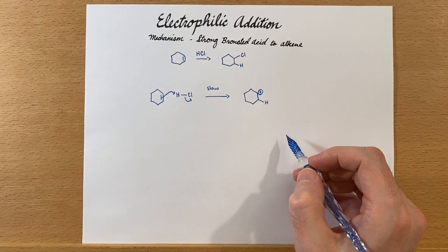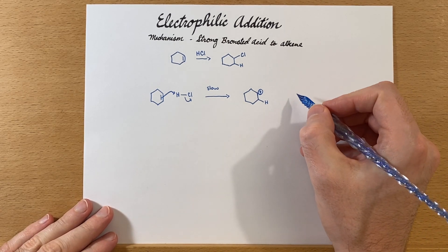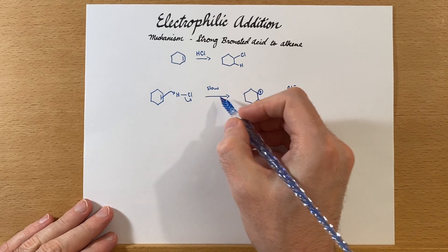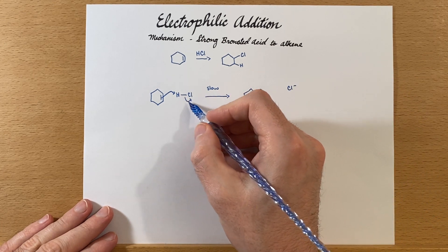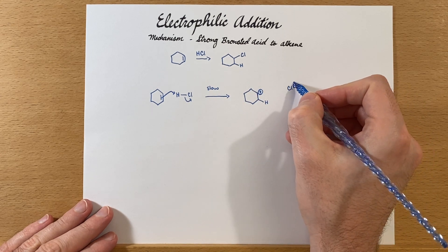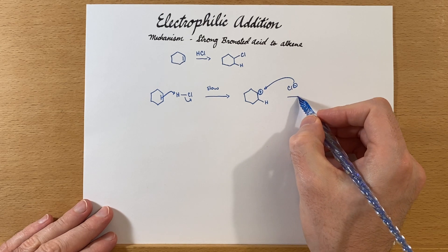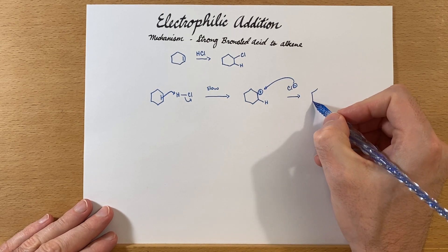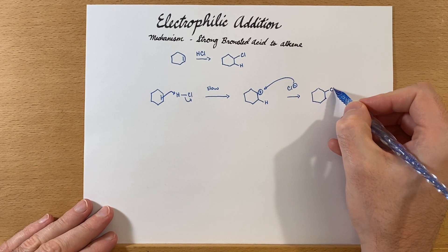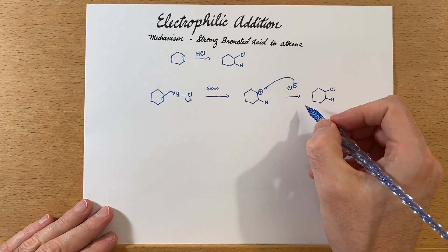The next step, coordination, is rather quick. The chloride that forms when the hydrogen chloride breaks apart will coordinate with that positive charge. That forms our product. It's really just a two-step mechanism with the carbocation intermediate.